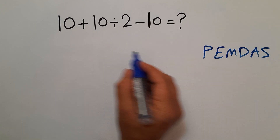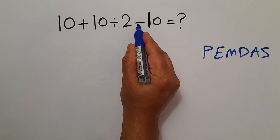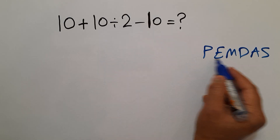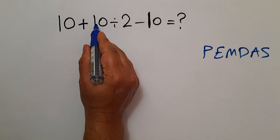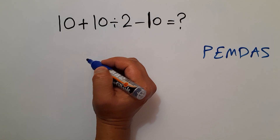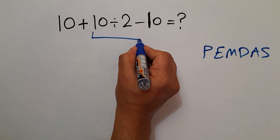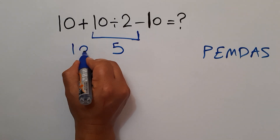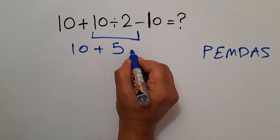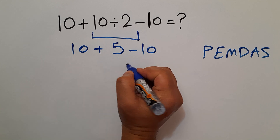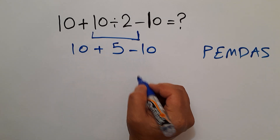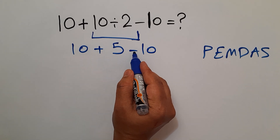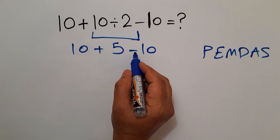Here we have this addition, this division, and this subtraction. According to PEMDAS, we have to handle 10 divided by 2 first. So 10 divided by 2 gives us 5, giving us 10 plus 5 minus 10. Here we work from left to right because addition and subtraction have equal priority.